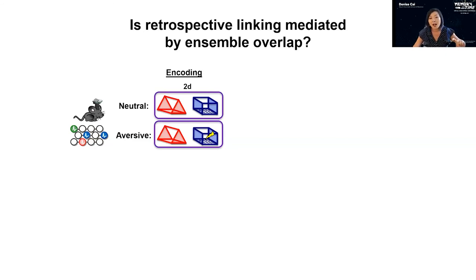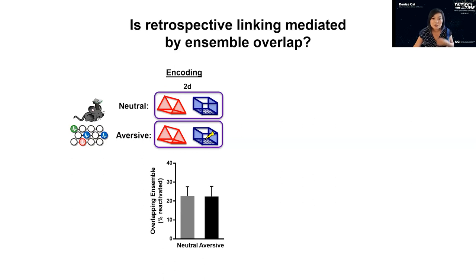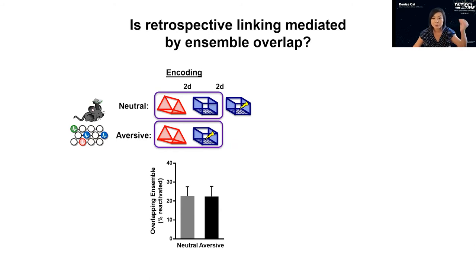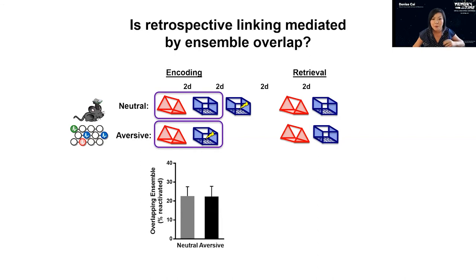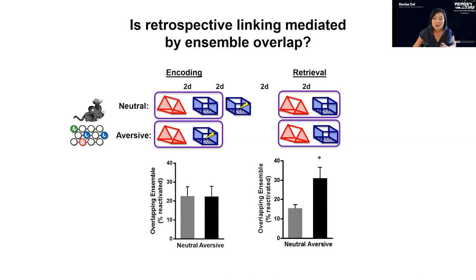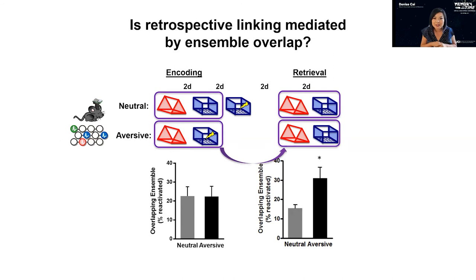In the aversive group, animals did transfer fear back to the red context. During initial encoding, there was no difference in neural ensemble overlap between the two conditions. Then at retrieval — where we saw increased freezing in the red context — we controlled for freezing in the blue context, updated the memory with a shock, and imaged during retrieval. What we found is quite interesting: sometime between encoding and retrieval, there was an increase in overlap of neural ensembles at retrieval. Something interesting was happening between encoding and retrieval.